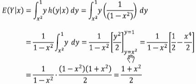Doing that evaluation, we get 1 over 1 minus x squared times when y is equal to 1, we get 1 squared over 2, which is a half. When y equals x squared, we get x squared squared, which is x to the fourth over 2.